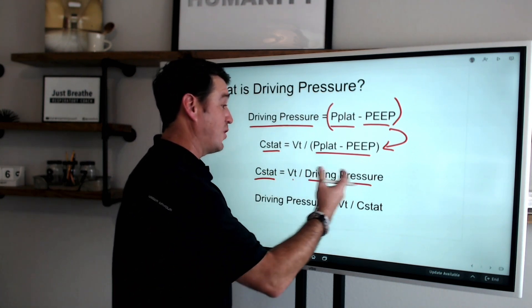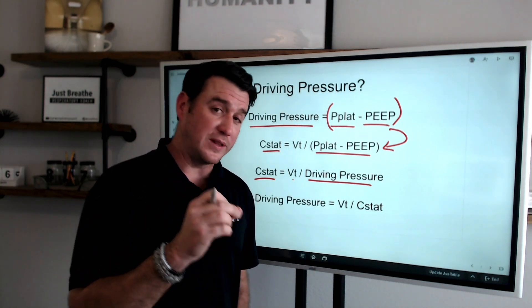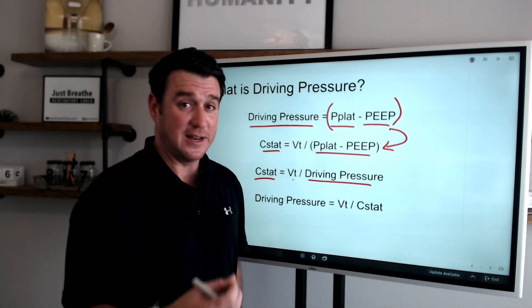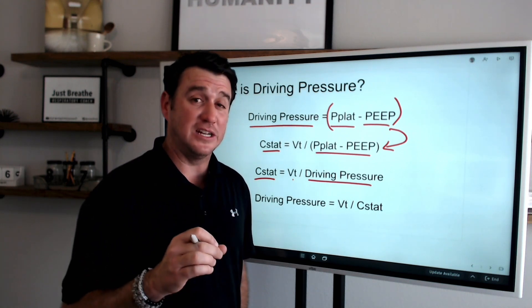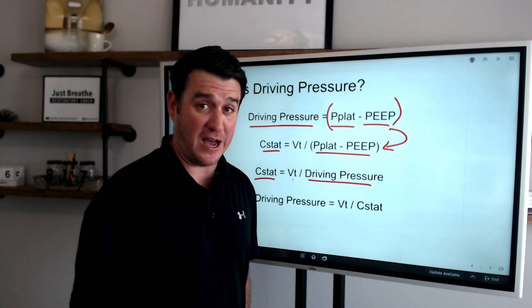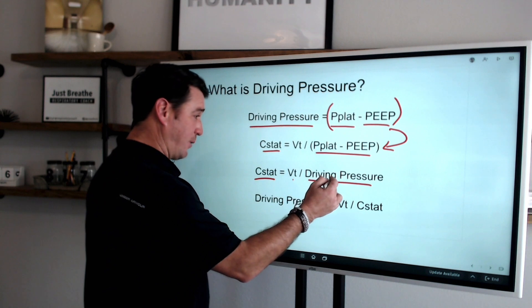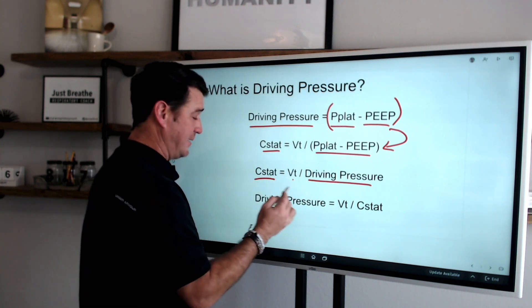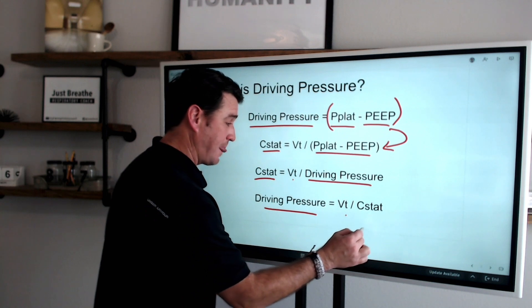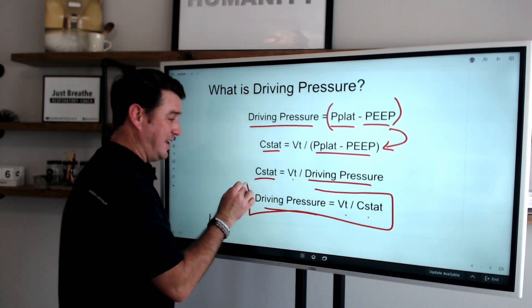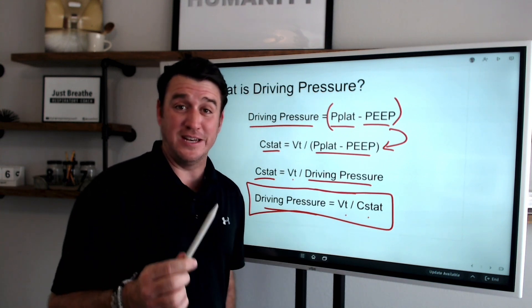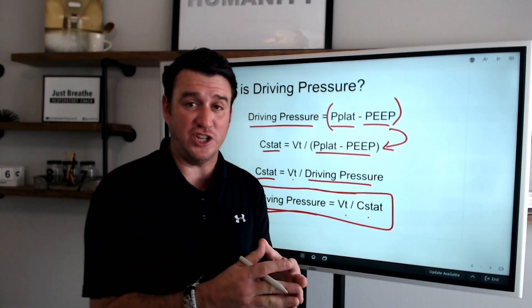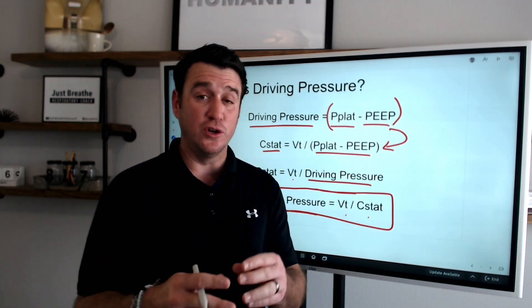If you can adjust your mind to think that static compliance is tidal volume divided by driving pressure, then you're going to start thinking about driving pressure with every single patient assessment you do. When you're looking at your plateaus and doing your ventilator assessments, that's going to be a big thing. Now let's move this formula around one more time to get us to a working formula that will help us define what driving pressure is. If we get driving pressure over here by itself, we'll multiply both sides by driving pressure and then divide both sides by static compliance. You'll see that driving pressure equals tidal volume divided by static compliance. Now this right here is a working definition that helps us define driving pressure. You see what driving pressure is, is it is the ratio of tidal volume to static compliance.